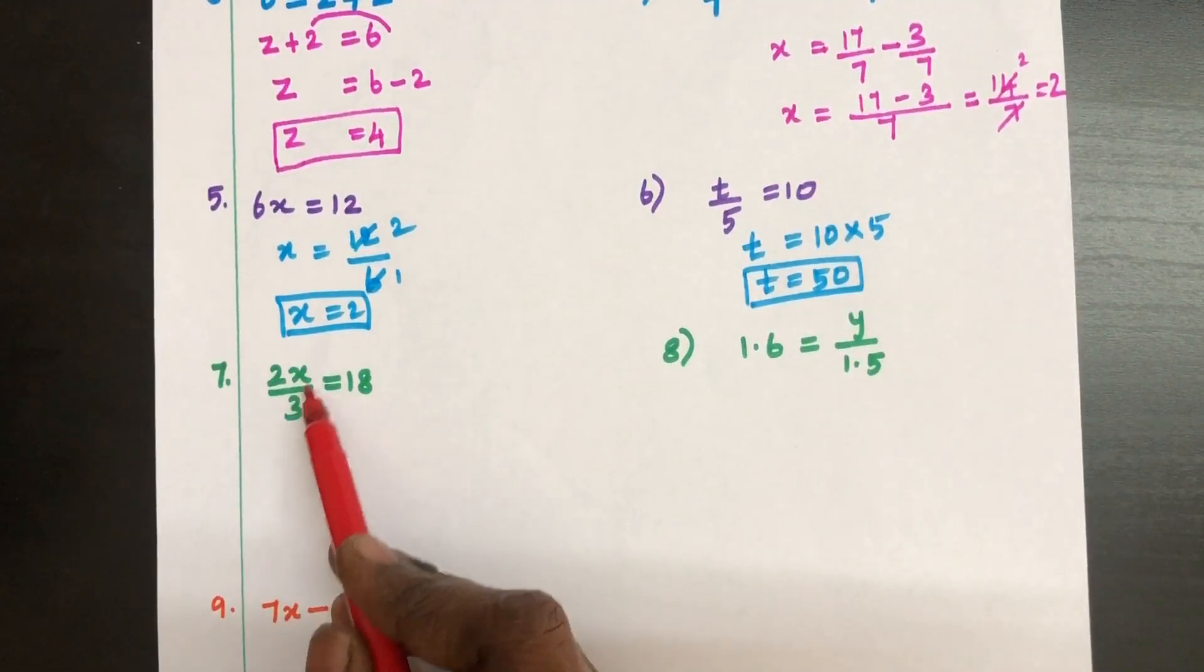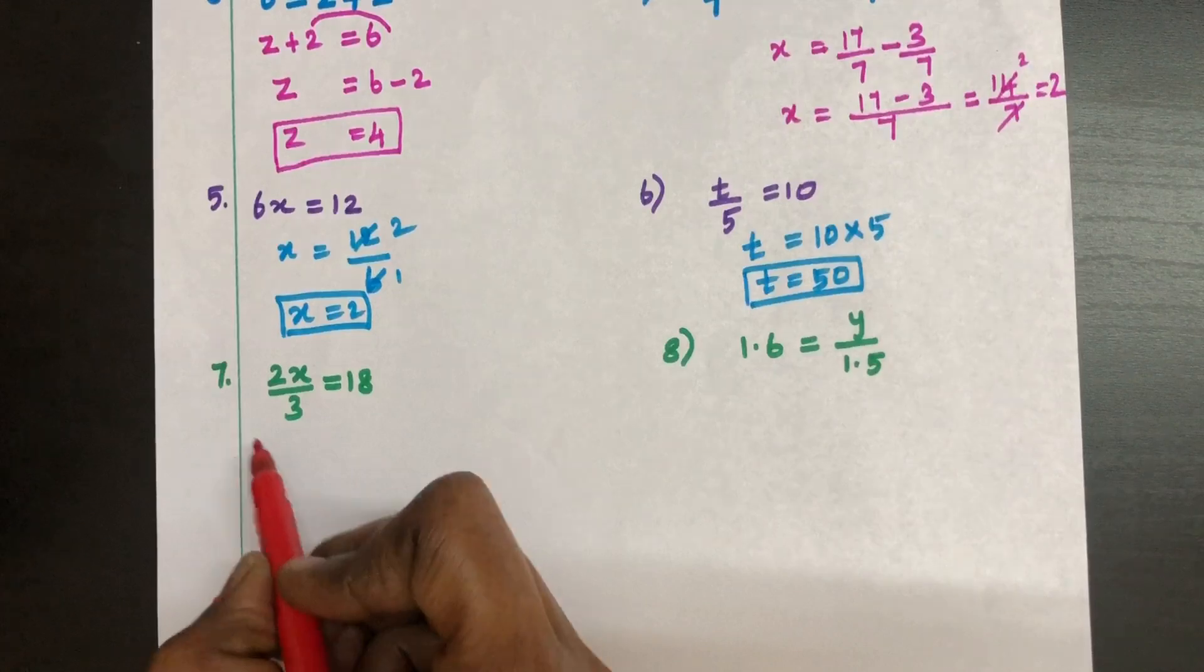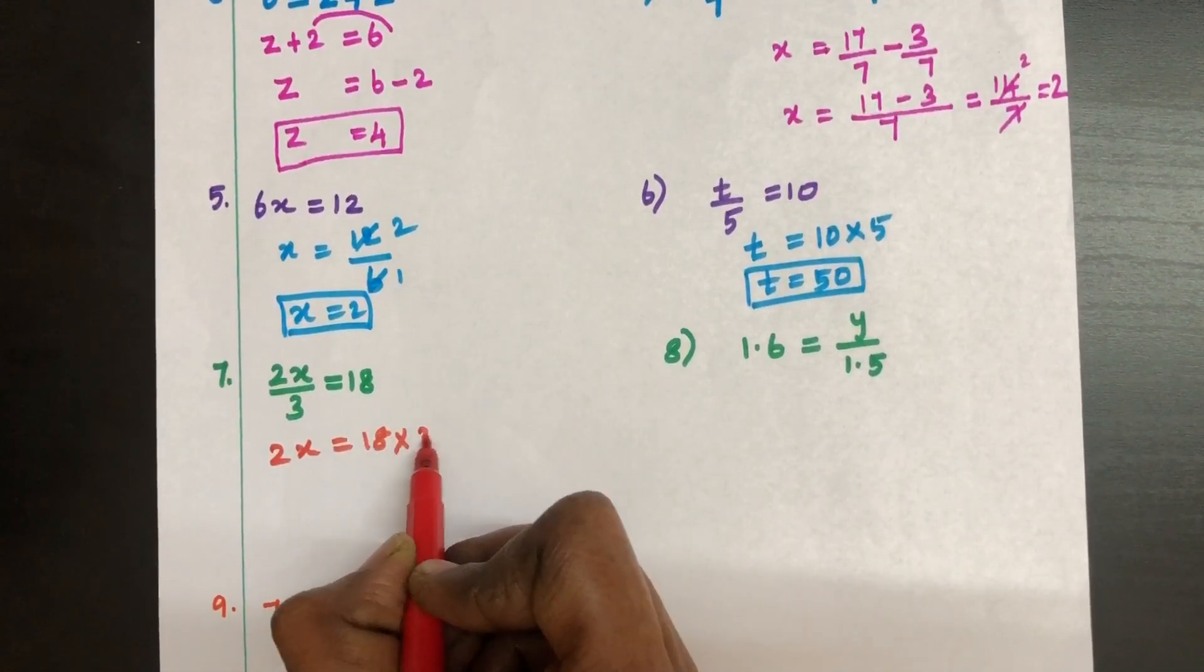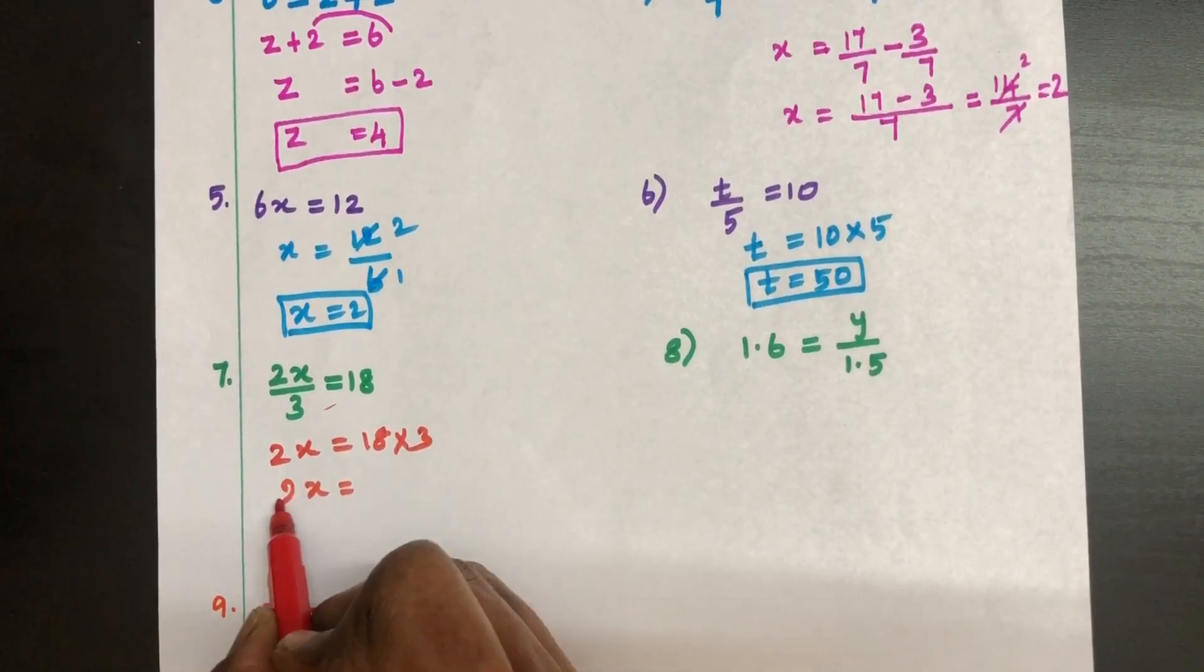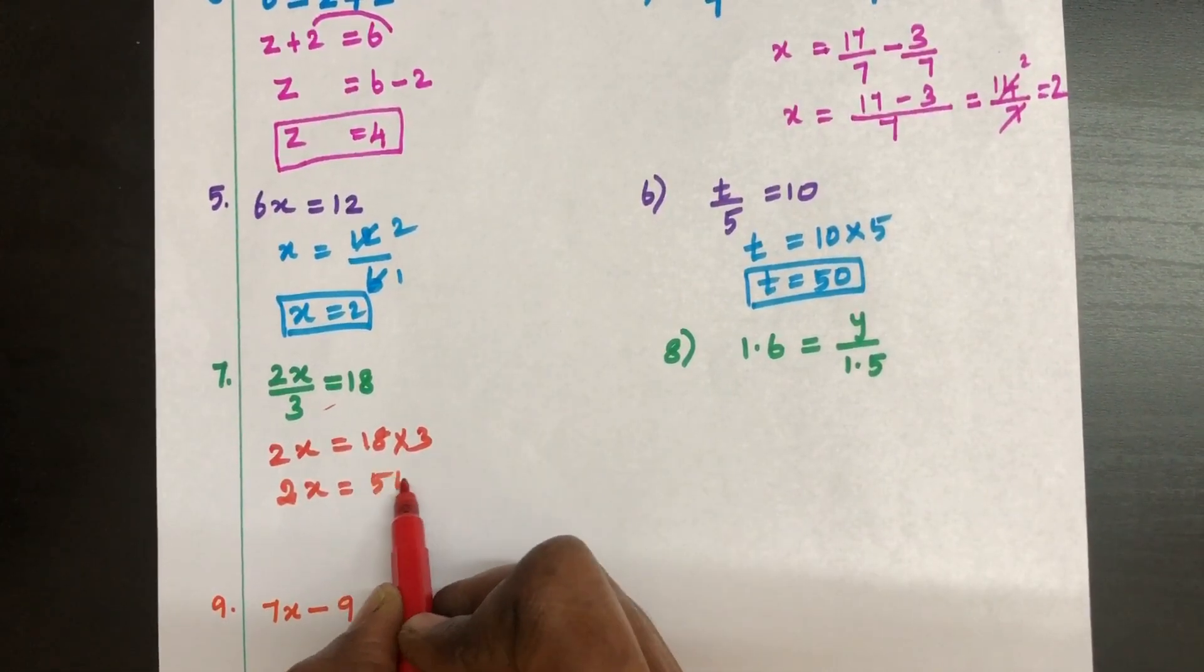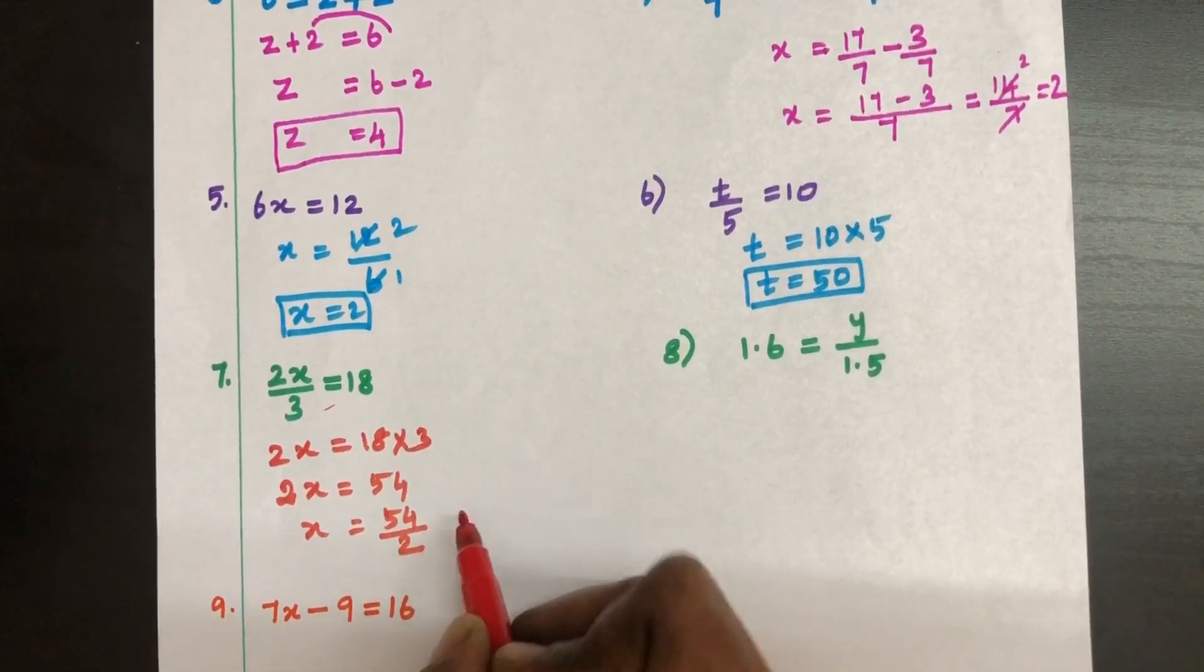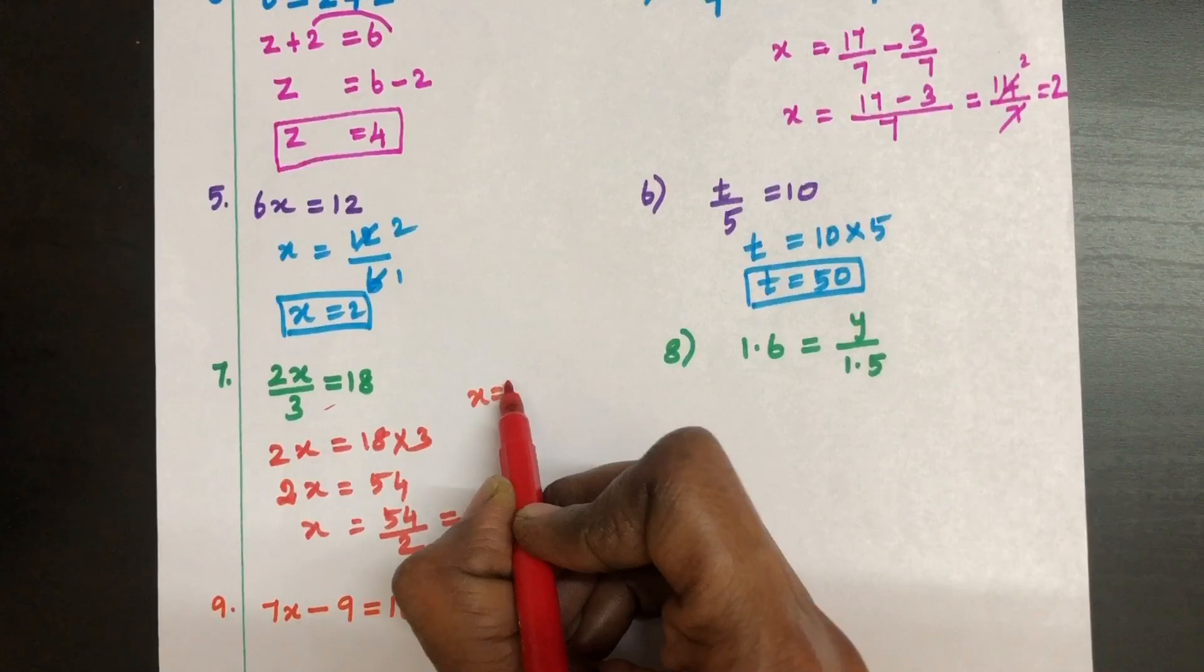Seventh question. 2X by 3 is equal to 18. So 2X equal to 18 into 3. Cross multiply. 2X equal to 54. X equal to 54 divided by 2. This gives us 27. So the value of X is 27.